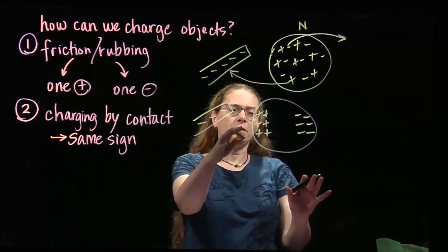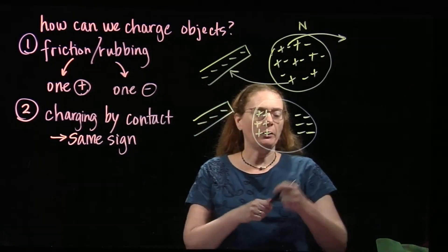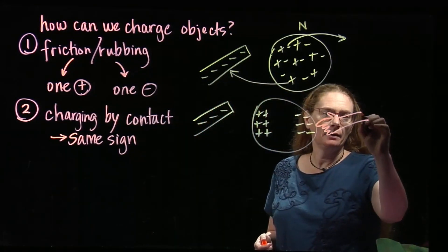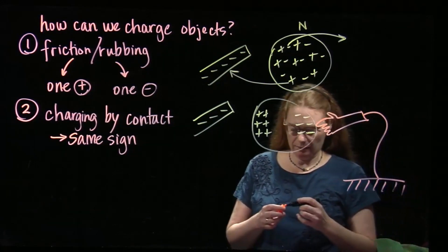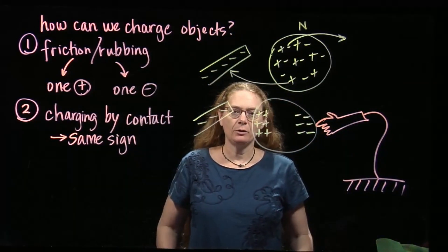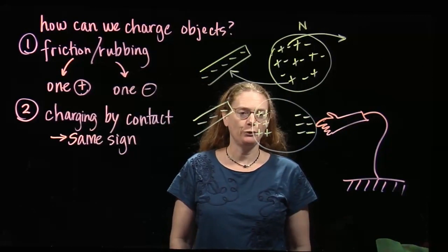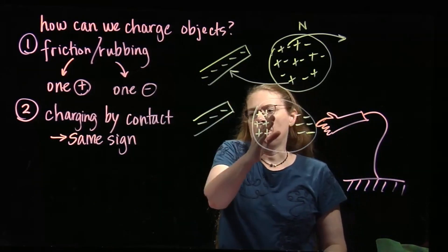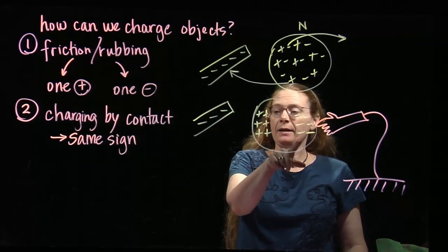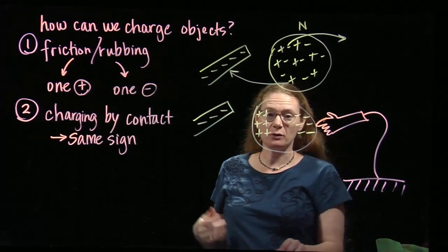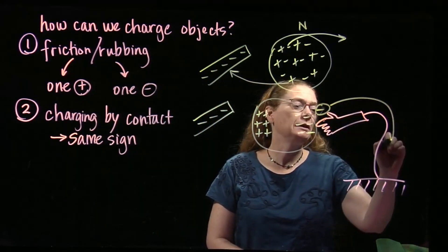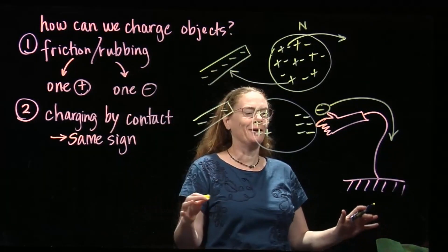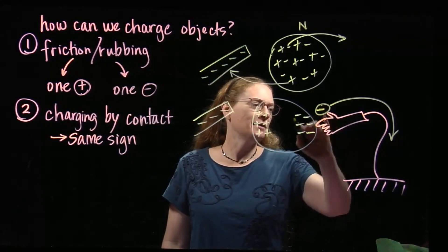Now I'm going to touch the metal ball with my hand, and my hand is attached to ground — I'm literally in contact with the ground. Charges can move up or down through me. With the rod close but not touching, the positives still want to stay near the rod side, but the negatives say 'I can get even farther away.' So the negatives just leave the ball and go to ground, because if they see a connection to the earth — the whole planet — they can spread out a lot. So the electrons go down to ground.